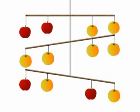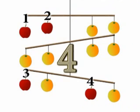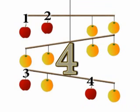Can you see the apples and oranges on it? How many apples are there? 1, 2, 3, 4. There are 4 apples.